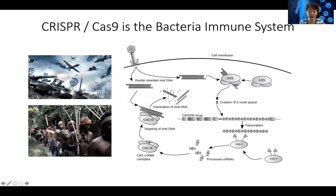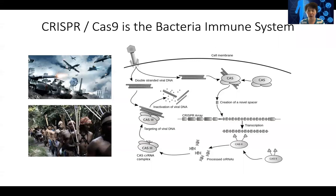It turns out bacteria has one, although it's kind of primitive. When there is a virus that infects a bacterial cell, the virus will leave the protein shell on the outside but inject its DNA into the bacteria and utilize the bacteria's transcription, DNA replication, and protein packaging mechanisms to make copies of itself. Then it will lyse the cell open and infect more cells.